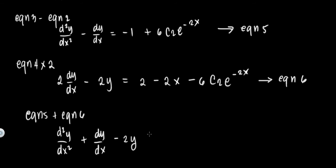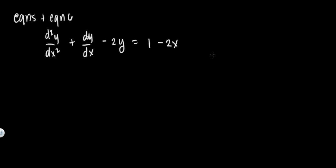So the final answer is: d²y/dx² + dy/dx - 2y = 1 - 2x, with c1 and c2 eliminated. Let's have another example — example number 2.